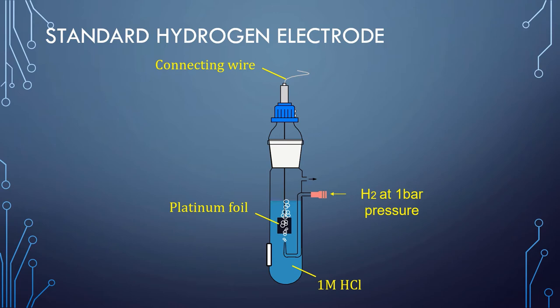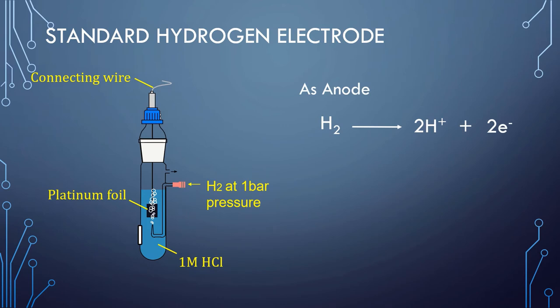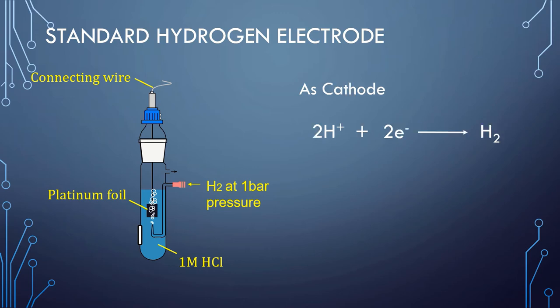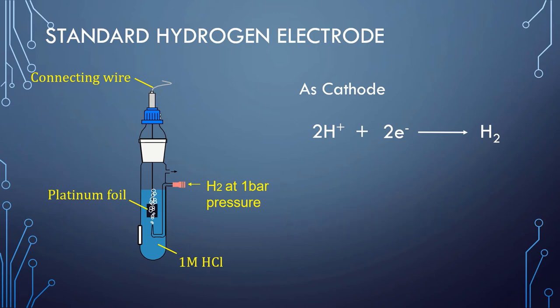This electrode acts as an inert electrode through which the inflow or outflow of electrons takes place. When this electrode acts as the anode, oxidation takes place — hydrogen gas changes into H⁺ ions which go into solution. When it acts as the cathode, reduction takes place — H⁺ ions from the solution change into hydrogen gas. This means the electrode is reversible with respect to H⁺ ions. The electrode potential of the Standard Hydrogen Electrode is taken as zero at 298 K.